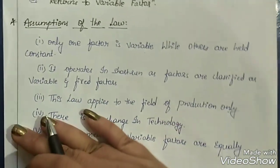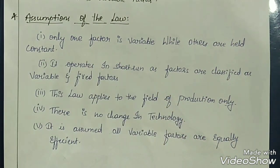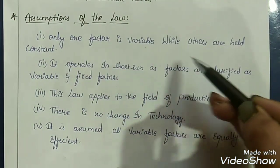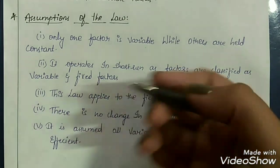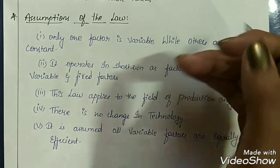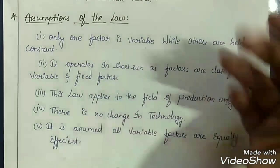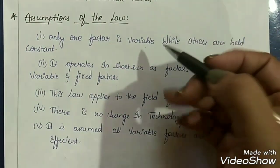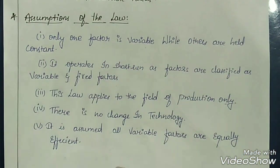There are certain assumptions of this law. First: only one factor is variable while others are held constant. Only one factor will be variable, so we can change only one variable while all others have to be constant. In our example, the variable factor is labor and the fixed factor is land.